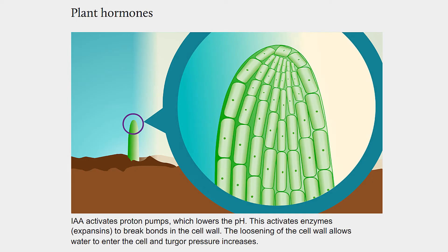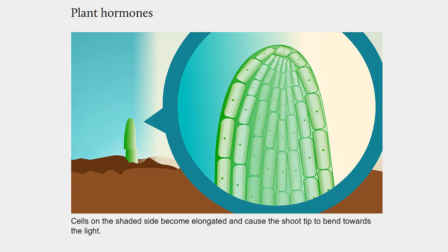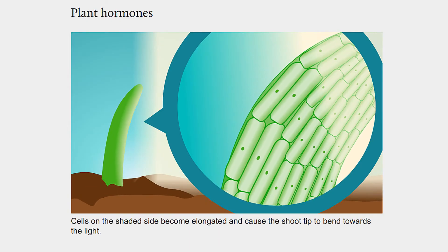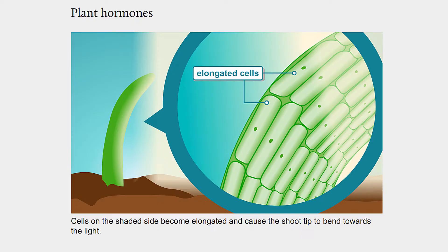IAA activates proton pumps, which lowers the pH. This activates enzymes, expansins, to break bonds in the cell wall. The loosening of the cell wall allows water to enter the cell and turgor pressure increases. Cells on the shaded side become elongated and cause the shoot tips to bend towards the light.